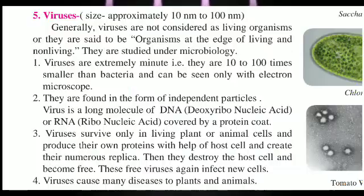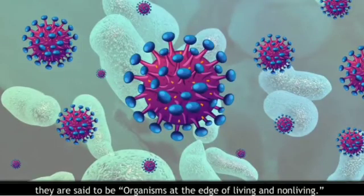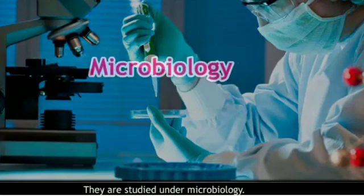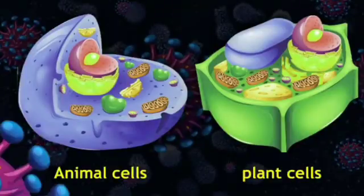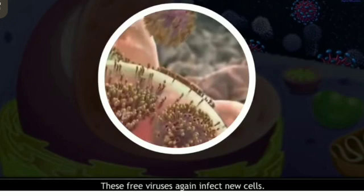Let us move towards viruses. Generally, viruses are not considered as living organisms; they are said to be organisms at the borderline of living and non-living. They are studied under microbiology. Viruses are extremely minute — 10 to 100 times smaller than bacteria — and can be seen only with an electron microscope. They are found in the form of independent particles. A virus is a long molecule of DNA or RNA covered by a protein coat. Viruses survive only in living plant or animal cells, produce their own proteins with the help of the host cell, and create numerous replicas. Then they destroy the host cell and become free, and these free viruses again infect new cells. Viruses cause many diseases to plants and animals.